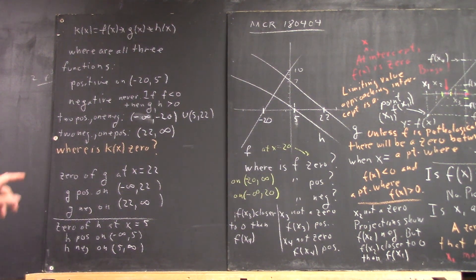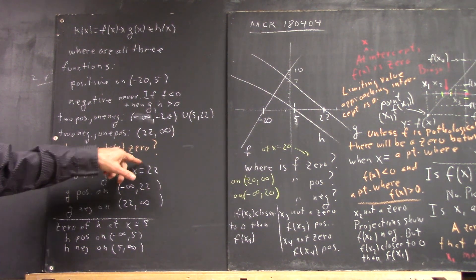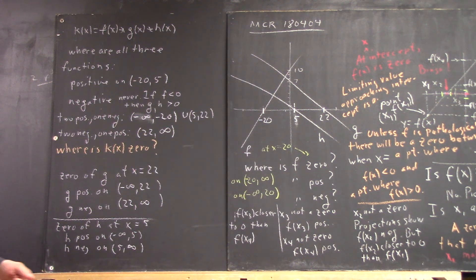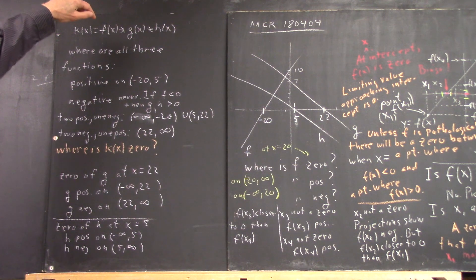Okay, so we have the question: where is k of x zero? We quickly got a good answer, and at least three people gave me good responses.